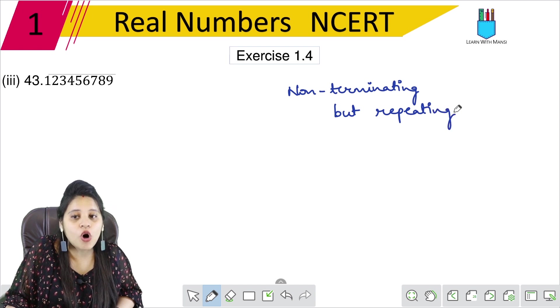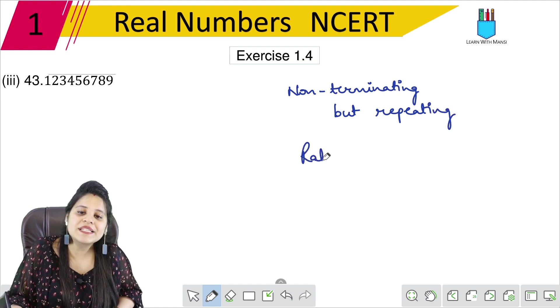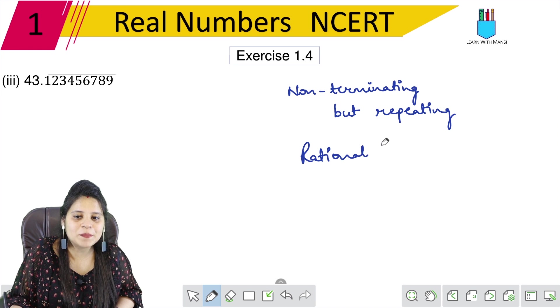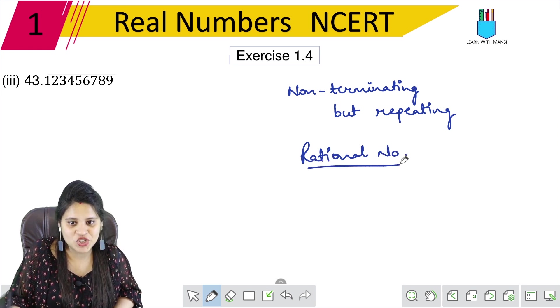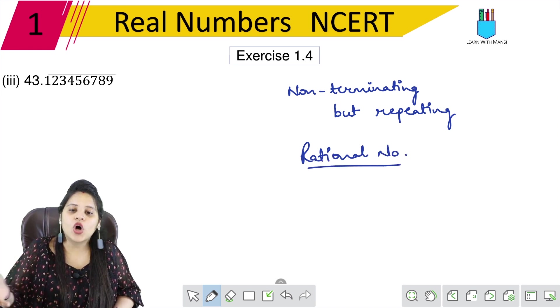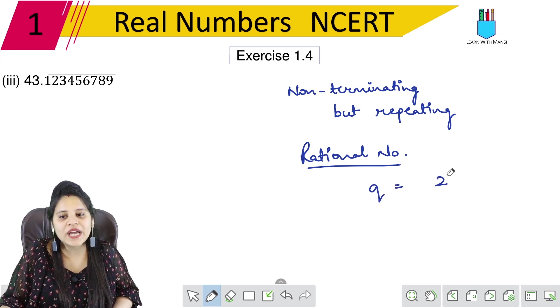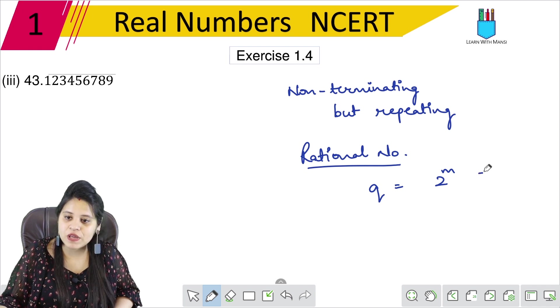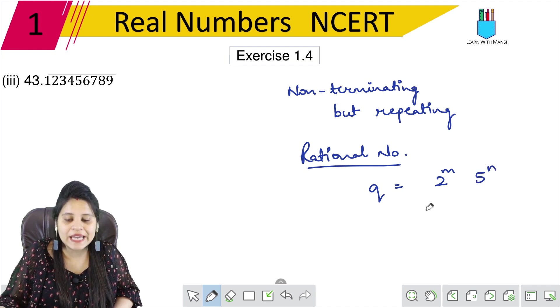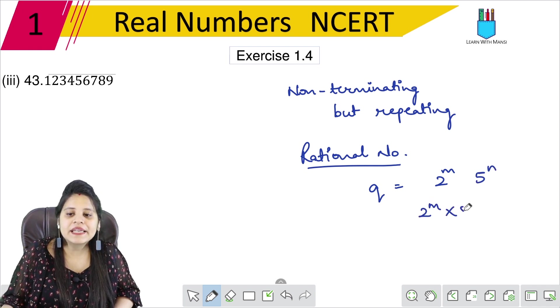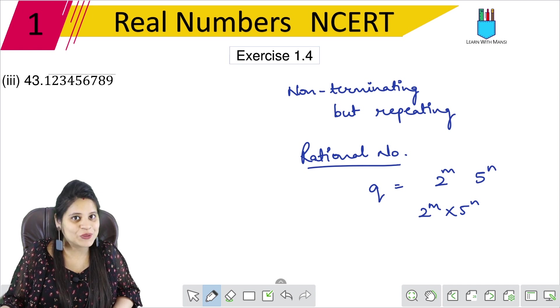If it is non-terminating and repeating, that means this is a rational number decimal expansion. Also, if you have to speak about Q, then we will say the prime factors are 2 raised to the power of m, or 5 raised to the power of n, or it will be the combination.